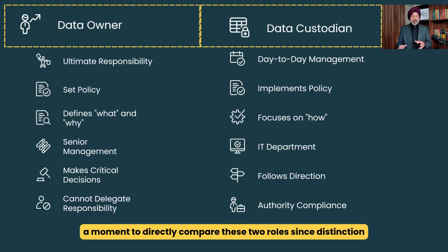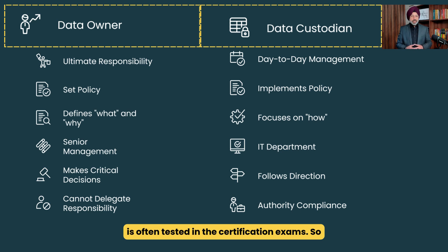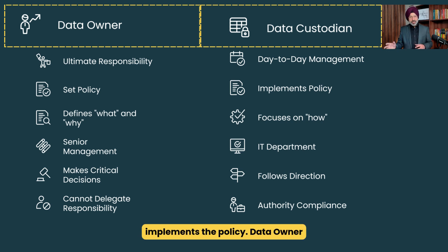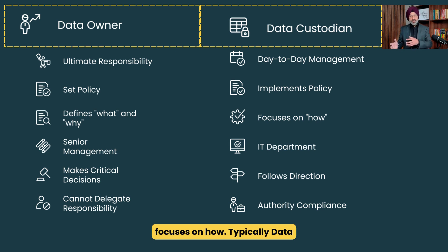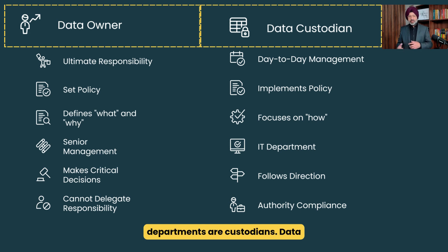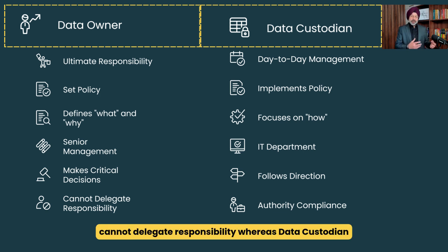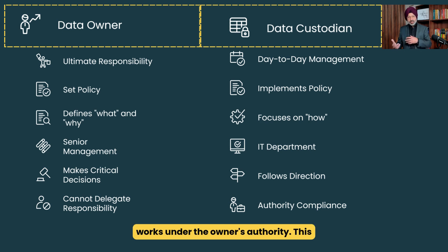Now let's directly compare these two roles, since the distinction is often tested in certification exams. The data owner has ultimate responsibility, whereas the data custodian is responsible for day-to-day management. The data owner sets policy; the data custodian implements it. The data owner defines what and why; the data custodian focuses on how. Typically, the data owner is from senior management, while IT departments are custodians. The data owner makes critical decisions; the data custodian follows direction. Remember: the data owner cannot delegate responsibility, whereas the data custodian works under the owner's authority.